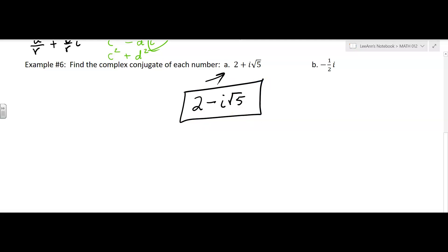The other one, that's a little bit different, right? It just has the imaginary part, right? It just has negative 1 half i. But you could think of it as 0 minus 1 half i.